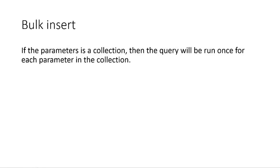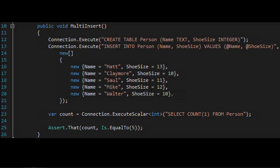A cool trick in Dapper is bulk insert. You can pass a collection of parameter objects and Dapper will execute that query once for each parameter set. For example, I'm inserting an array of five anonymous objects for Person — Dapper executes INSERT five times in one SQL command. You can build this up with a loop. In the end I verify there are five records.